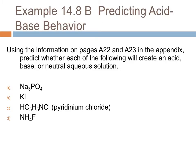Using the information and the appendix, predict each of the following will create an acid, base, or neutral solution. So there's Ka's and Kb's in some of the appendixes, but really we just want to look at these and separate the ions. So, and this is actually a little tricky. Sodium phosphate, we want to look at the ions as my positive ion and my negative ion.